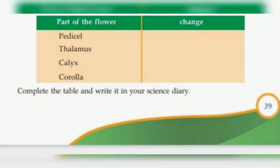The changes: part of the flower and the change. Pedicel, Thalamus, Calyx, Corolla, Pedicel — what is the role of each part?